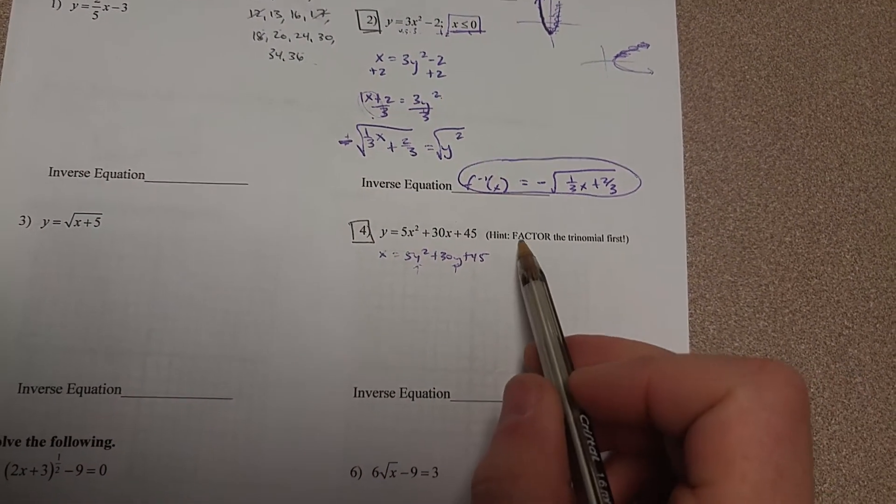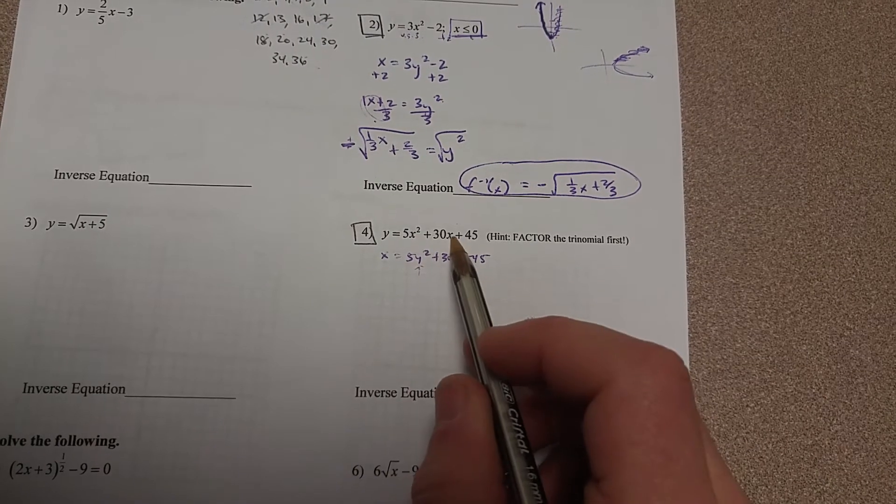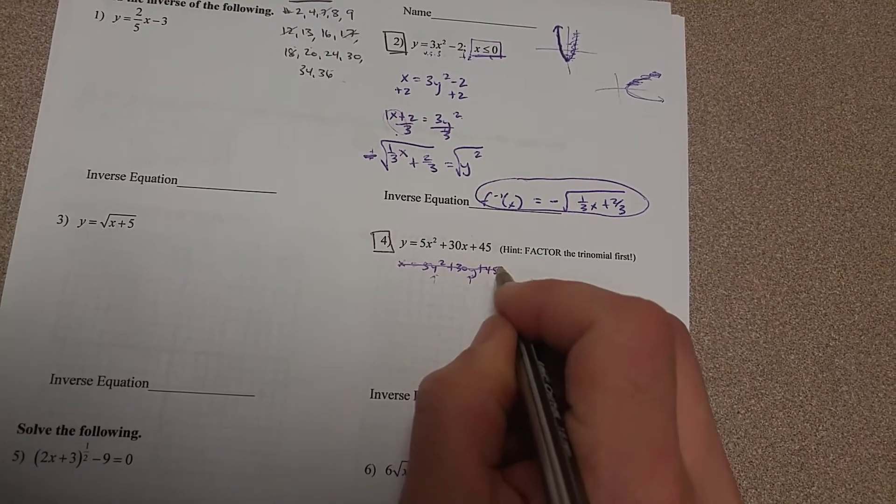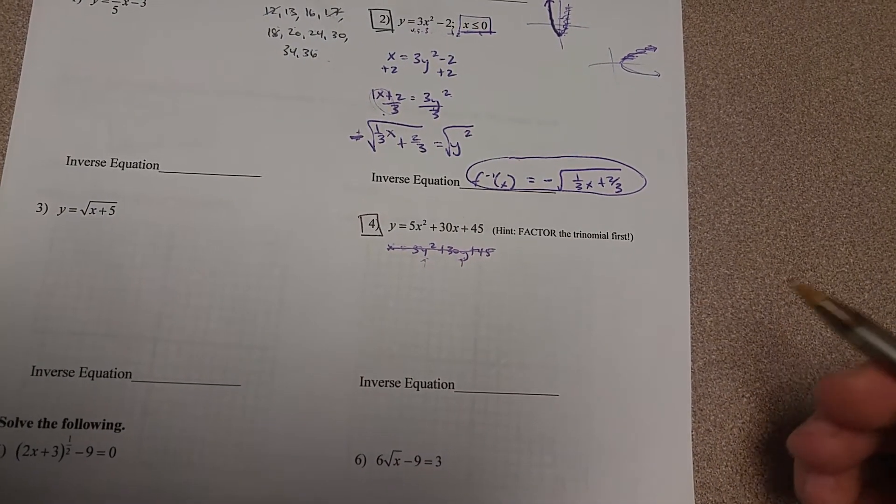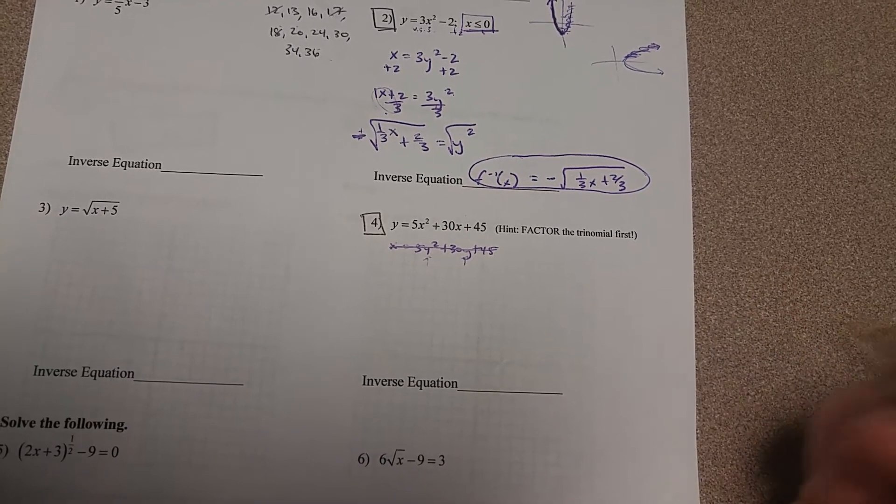So here's a hint: if we factor this trinomial first, it's going to actually factor in a unique way. It doesn't always do this, but this one will factor in a unique way so that I can find the inverse.